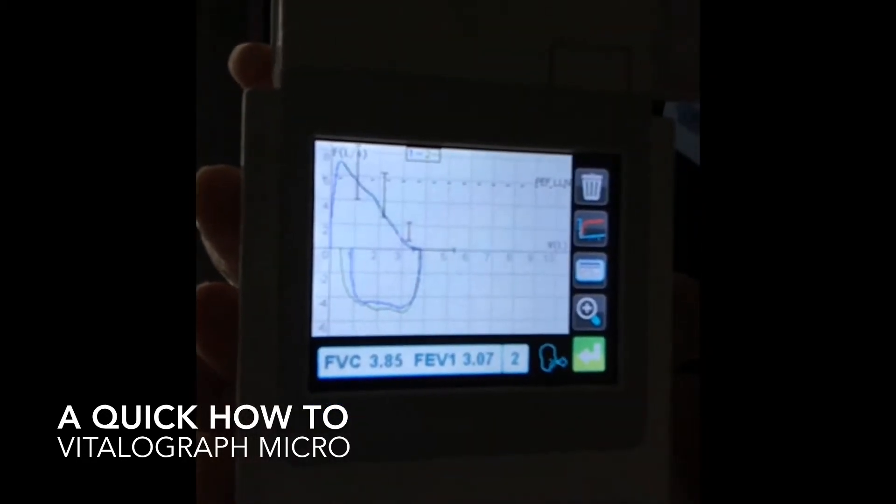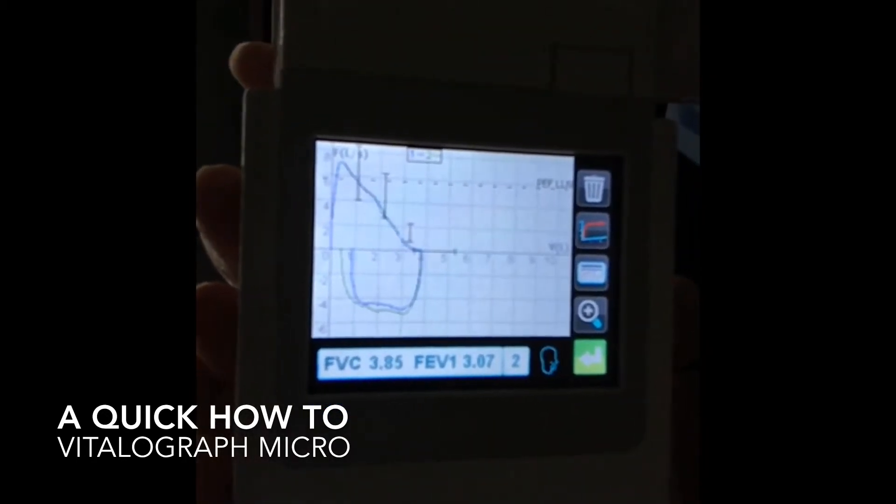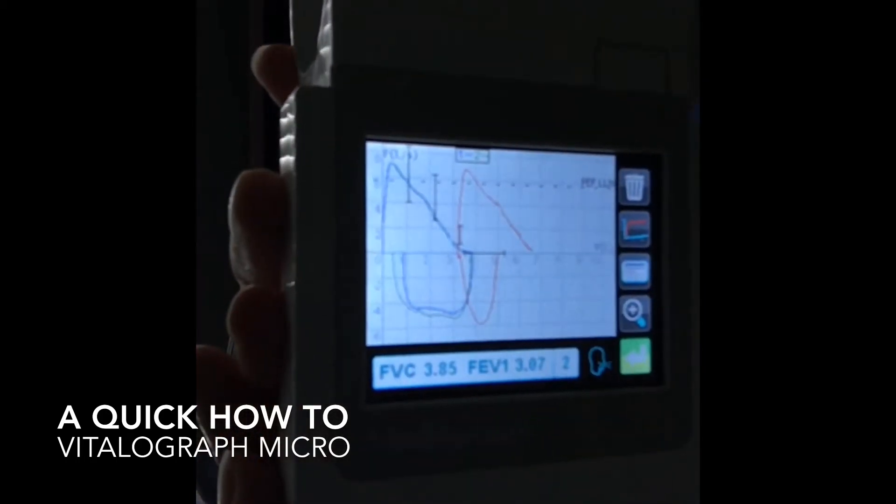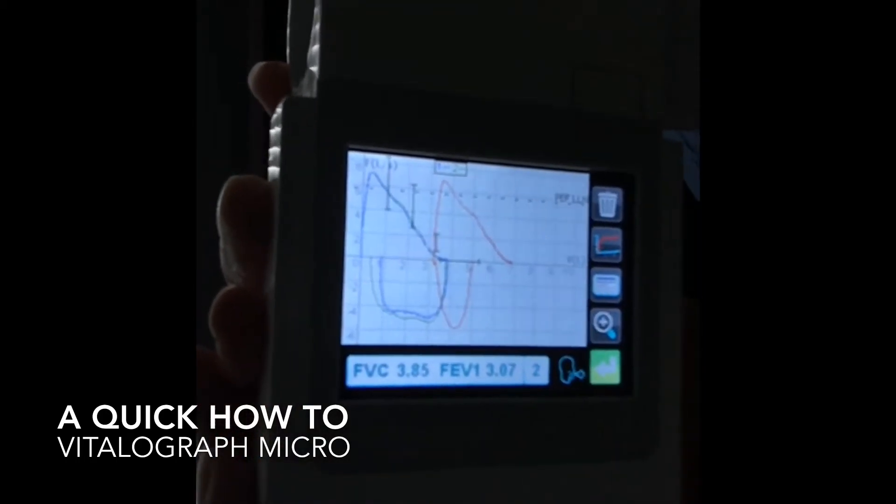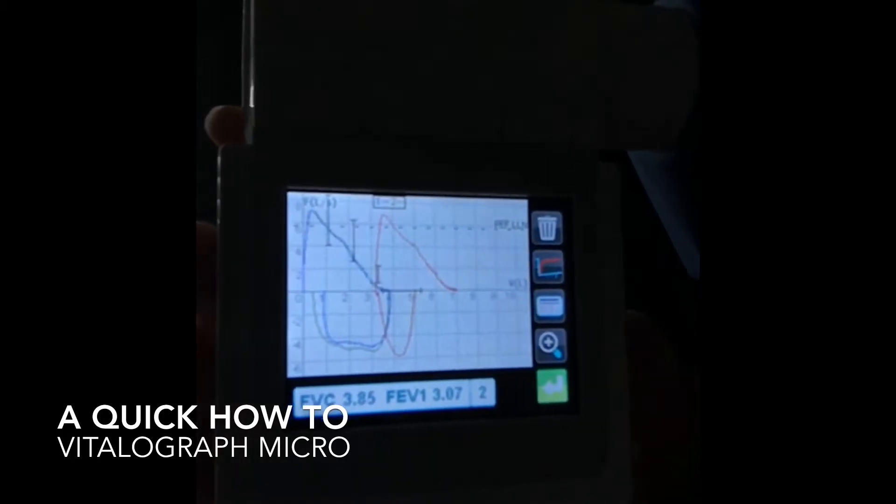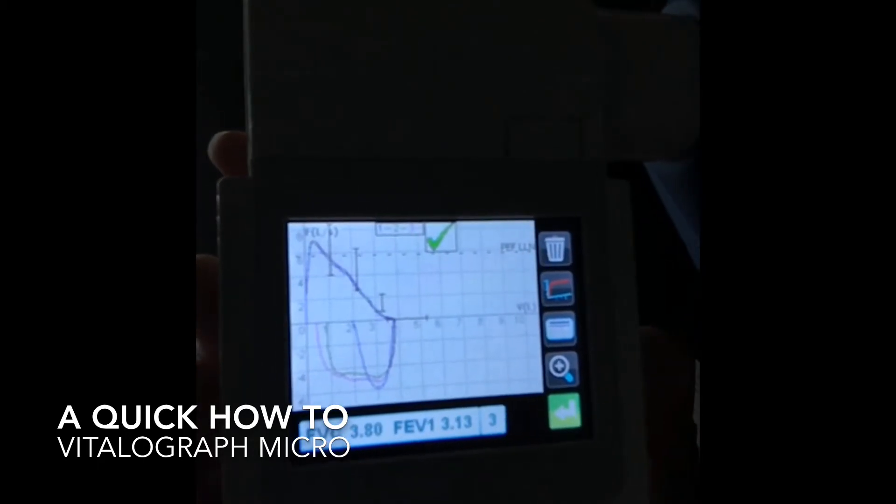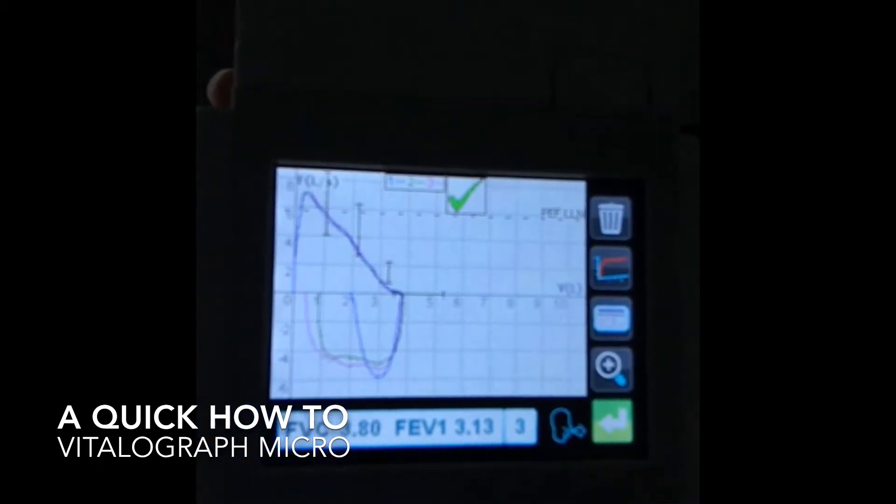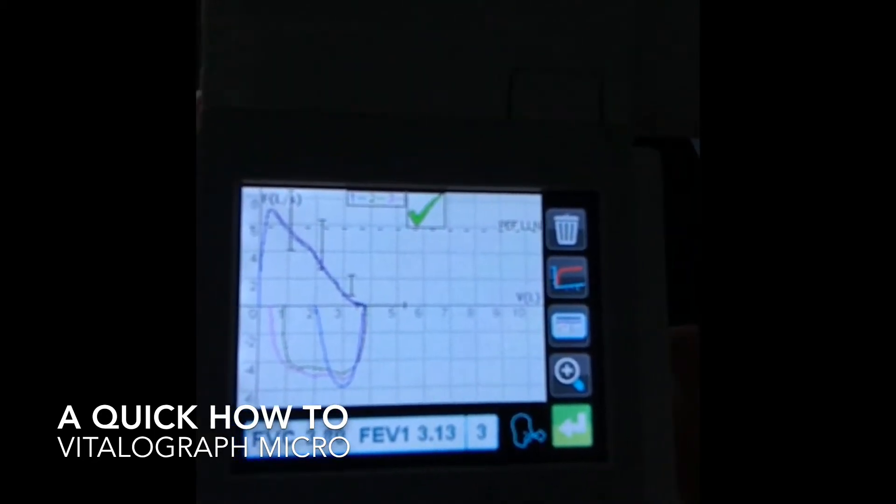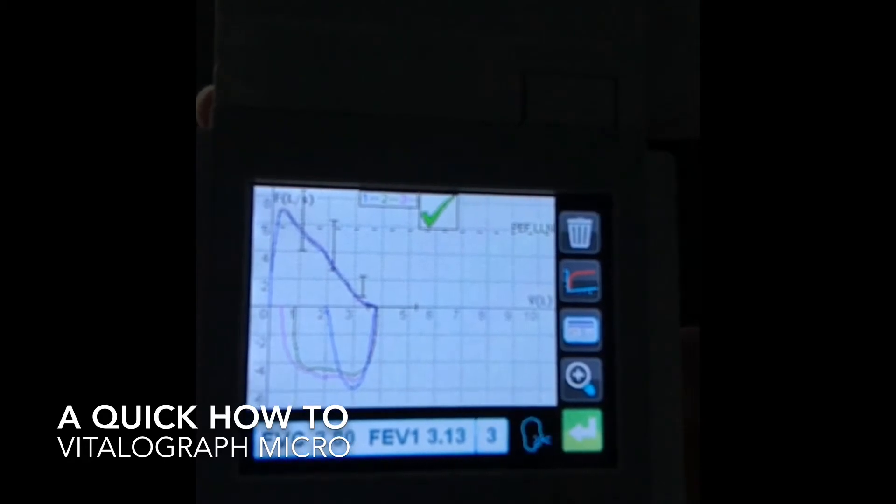And then you need to have three measurements. I'm going to go ahead and blow one more for you. All right. So when you hear that sound on the micro, that indicates that you have a minimum of three acceptable maneuvers on your device for that particular testing session.